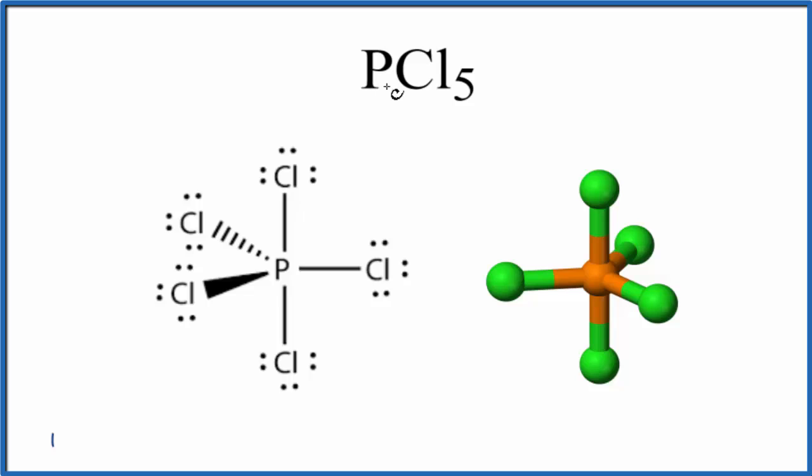So in answer to the question of whether PCl5 is ionic or covalent, it is covalent. It shares electrons between the phosphorus and the chlorine. It's also called molecular.